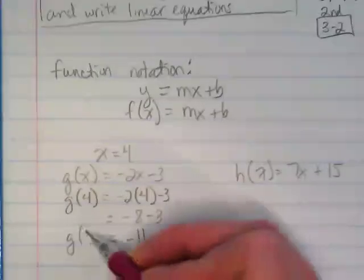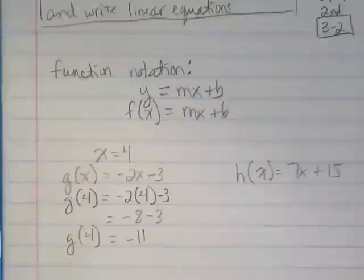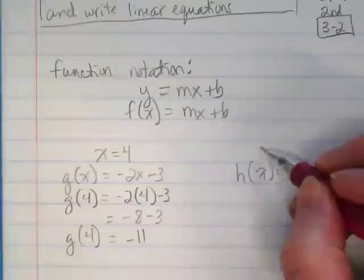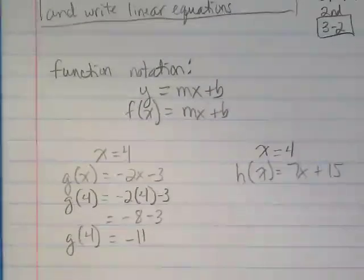So we're saying when our input is 4, our output would be negative 11. Let's try that. I'd like you guys to do the input when we have x equals 4 for the second equation. Try just putting in the input.